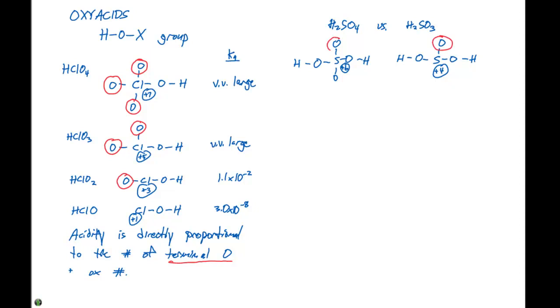So here we have one terminal oxygen, here we have two terminal oxygens. So H2SO4 would be a stronger acid than H2SO3 because it has two terminal oxygens and a higher oxidation state than the H2SO3.